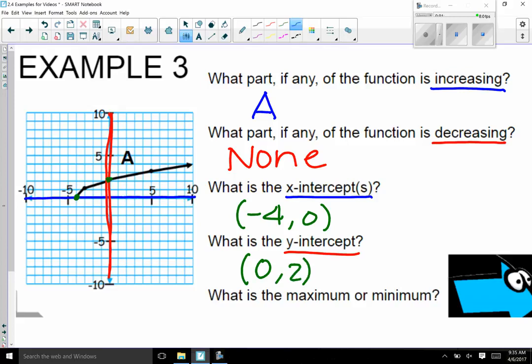And then the last part they're asking for is a maximum or a minimum. Is there a highest or lowest point of the graph? Actually, in this picture, in our function, we have our lowest point right here, which means the lowest of the graph, that would be the minimum. And it is actually the same point as our x-intercept. So that would be negative 4, 0.